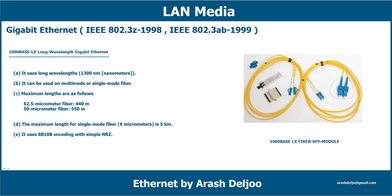1000Base-LX is intended mainly for connecting high-speed hubs, ethernet switches, and routers together in different wiring closets or buildings using long cabling runs, and it is most commonly implemented in a switch-to-switch configuration. Like 1000Base-SX, it uses 8B10B encoding with simple NRZ. It uses long wavelength, which means 1,300 nanometers.